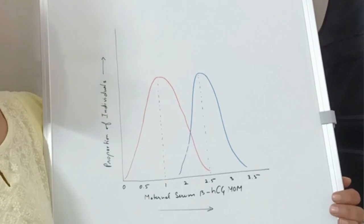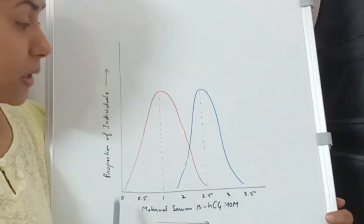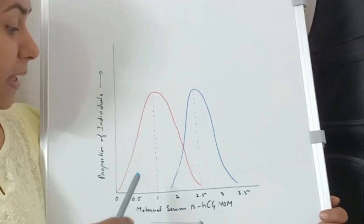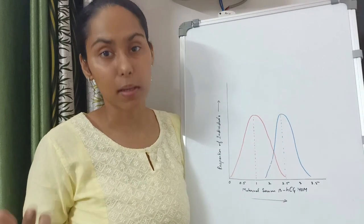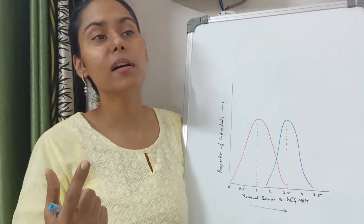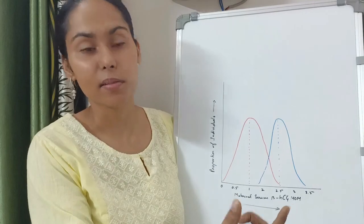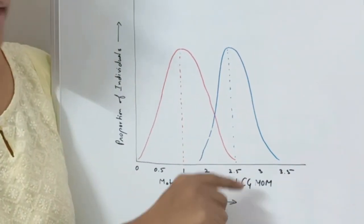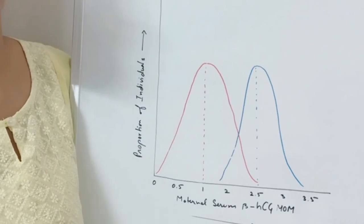The red curve represents unaffected individuals and the blue curve represents Down syndrome patients. Normal unaffected fetuses show a peak at around 1 MOM, so a report near 1 MOM is more likely to indicate an unaffected fetus. However, if the report shows 2.5 MOMs, the chance of Down syndrome increases — the proportion of Down syndrome cases at 2.5 MOMs is much higher than the proportion of normal fetuses at that level. PAPP-A levels are decreased in all aneuploidies.